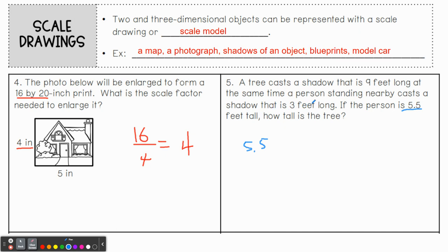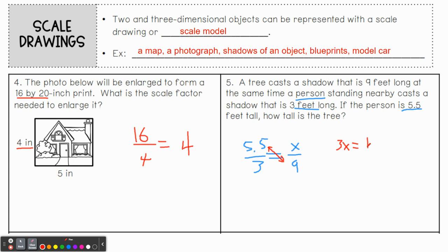The tree's shadow is nine feet, the person's shadow is three feet. So we set up: 5.5 over 3 equals x over 9. Cross multiply: 9 times 5.5 gives 49.5, so 3x equals 49.5. Divide by 3: the tree is 16.5 feet tall. That makes sense — if the person is 5.5 feet tall and casts a three-foot shadow, the shadow ratio is exactly three times, so the tree at 16.5 feet is also three times the person's height.